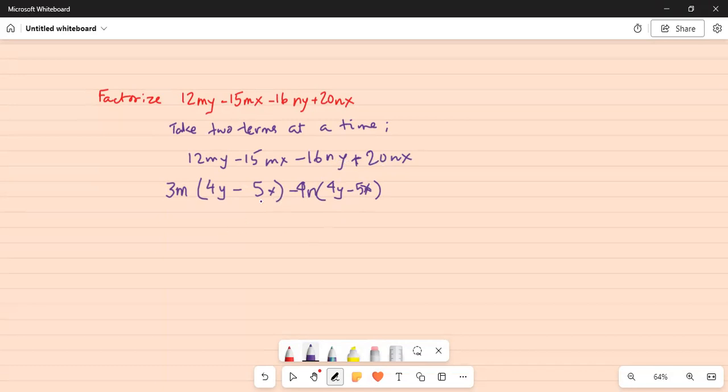So now if I consider these two terms, I see 4y minus 5x is a common factor between them. From the first term I'm left with 3m and from the second term I'm left with 4n. So this is the complete factorization of the given expression.